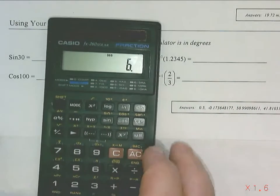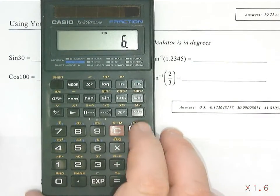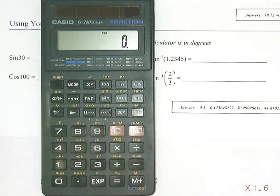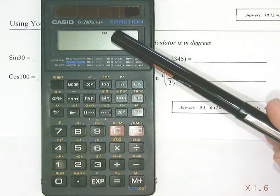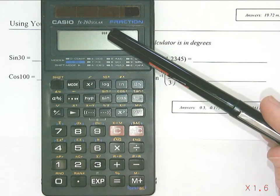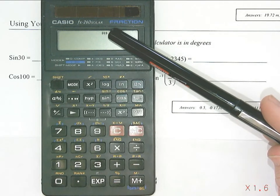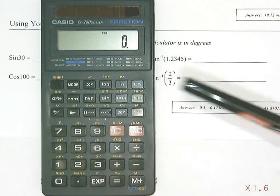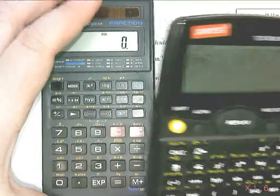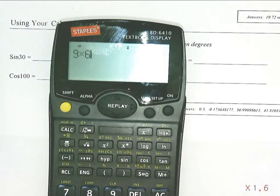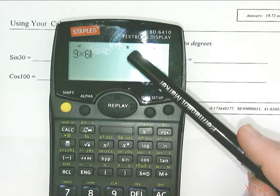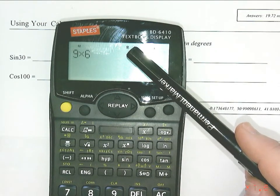To use trigonometry on your calculator, the first thing you need to do is get it into degrees. On this calculator, there's a little three-letter display at the top that says D-E-G for degrees. On this calculator, there is a much smaller letter D that appears to show degrees.